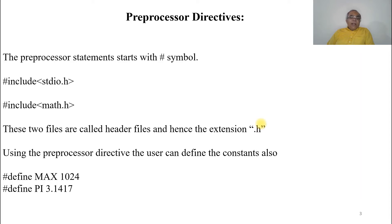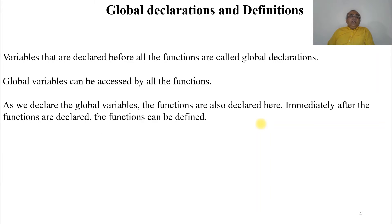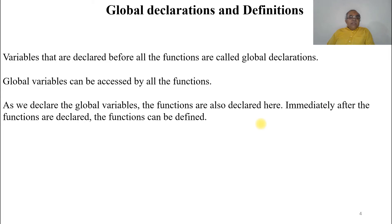Also #define PI 3.1417 — these are some examples of defining constants. Then comes global declarations and definitions. Variables that are declared before all the functions are called global declarations. This means that global variables can be accessed by all the functions. Functions are also declared here, and immediately after they are declared, the functions can be defined.